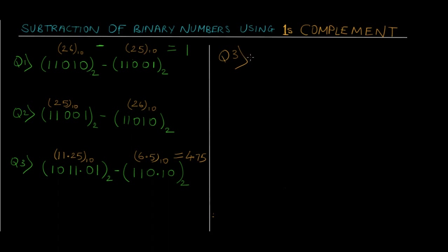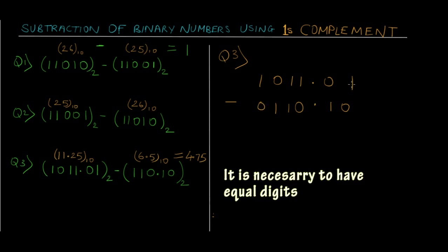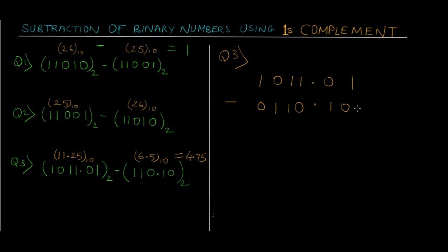Question three is a fractional binary number subtraction. The decimal values are 11.25 minus 6.5, which should give 4.75. The binary numbers are 1011.01 minus 0110.10. We add a zero to the second number to make the digit count equal — adding a zero doesn't change the value, it's just for representation. Now we calculate the ones complement of the second number 0110.10.